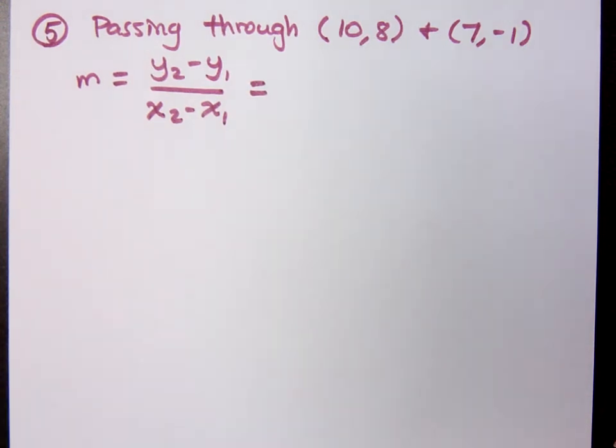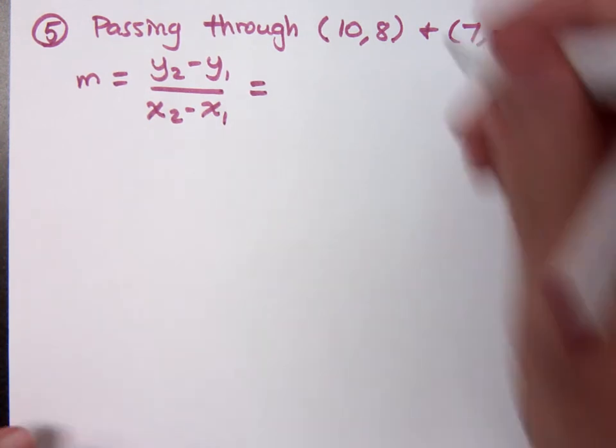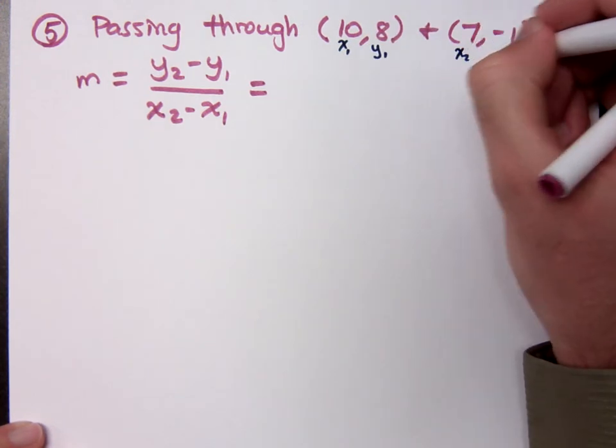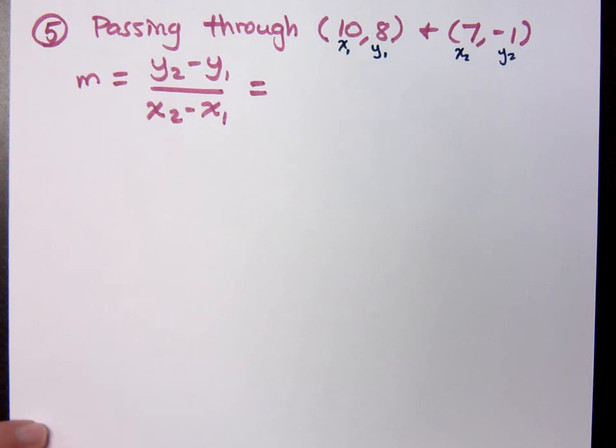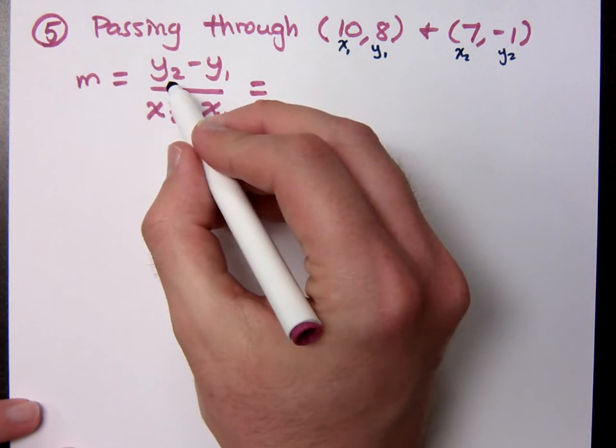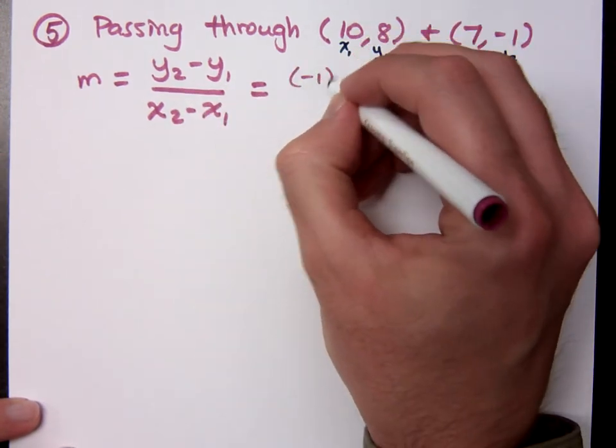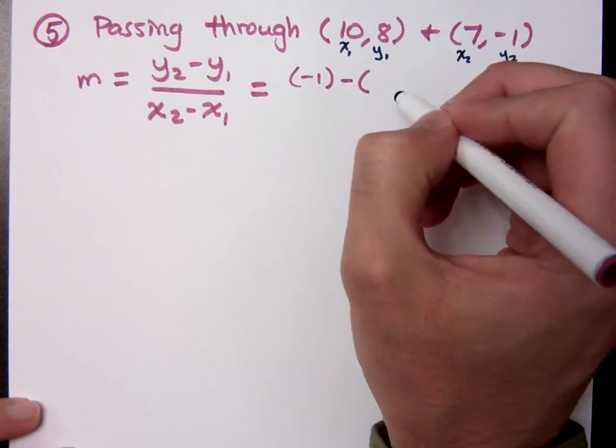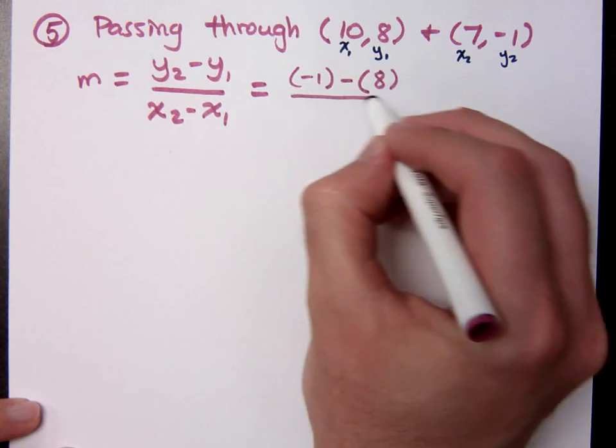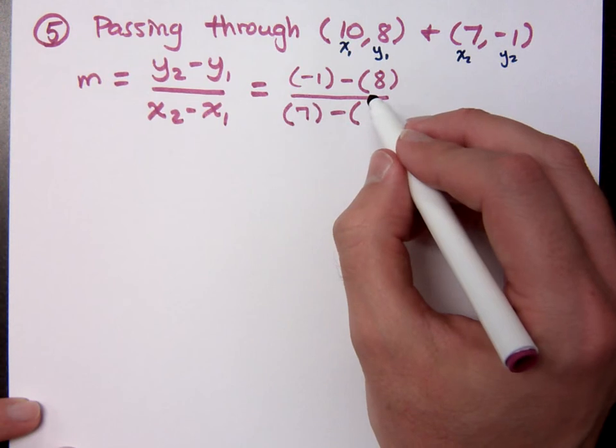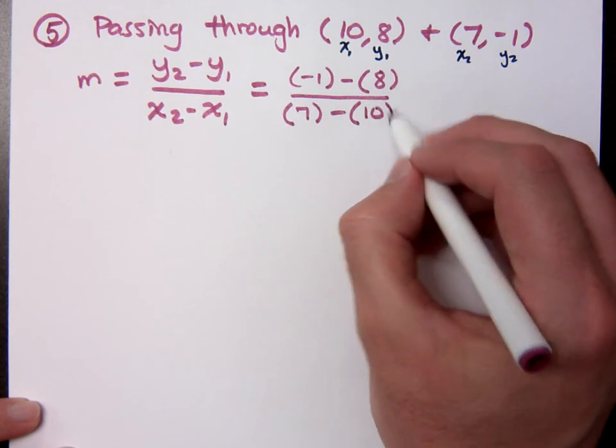Now, it doesn't really matter how you have these points labeled. What matters is that you keep the first point the first point and the second point the second one. So if you want to say this is x1, y1, and x2, y2, that's fine. Okay. So in this case, what's y2? Negative one. Negative one minus, what's y1? Eight. Over, what's x2? Seven minus, and then, excuse me, x1 is 10.